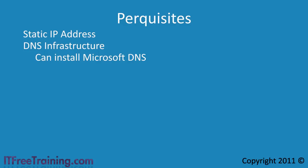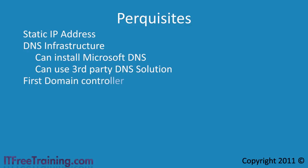Later on in the course I will cover DNS in a lot more detail. For the present I will install DNS with the domain controller, accepting all the defaults so I can concentrate on Active Directory. Active Directory requires DNS infrastructure but it does not have to be Microsoft's — if you have an existing DNS infrastructure such as Unix-based DNS you can use that as well. The next pre-requisite is that you need to ensure that you are a member of the local administrators group.